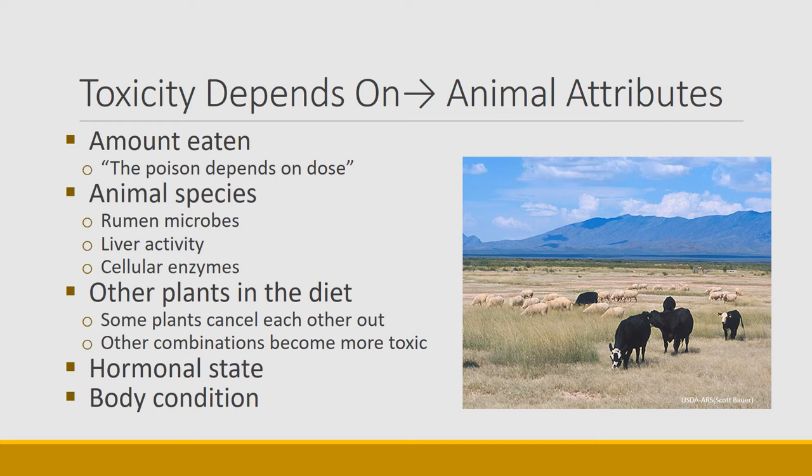Toxicity also depends on what other plants were in the diet. There are cases where two toxic compounds in combination will kind of invalidate each other's effects — tannins, for example, that bind with proteins can also bind with toxic plant compounds. Hormonal state can be important too: some compounds are toxic to pregnant females but not to open females. Body condition also matters — cattle and sheep in good condition are much more able to withstand the negative effects of lupins.